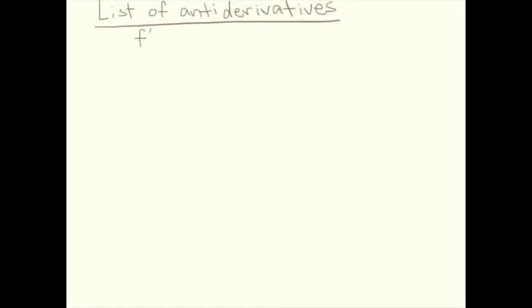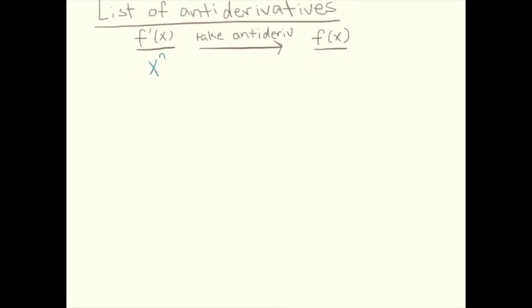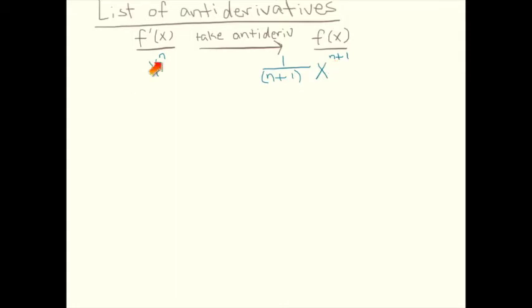Let's make a list of antiderivatives. The idea is that somebody already gives me a derivative, and my job is to figure out which function it came from. Suppose a derivative is already equal to x to the n power. What could I apply the power rule to in order to obtain x to the n? Since the power rule decreases the power, it must be an n plus 1 power, and the general rule is to divide by n plus 1. I bring the power down in front, n plus 1 cancels with n plus 1, leaving just x to the n, and we add plus C.